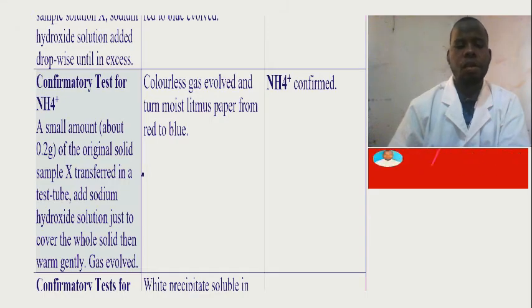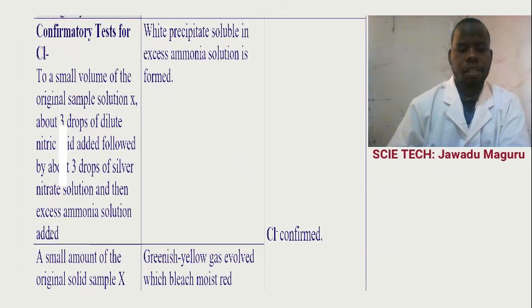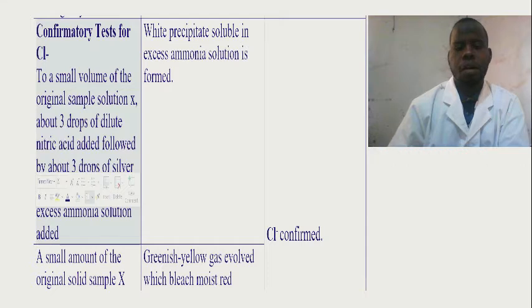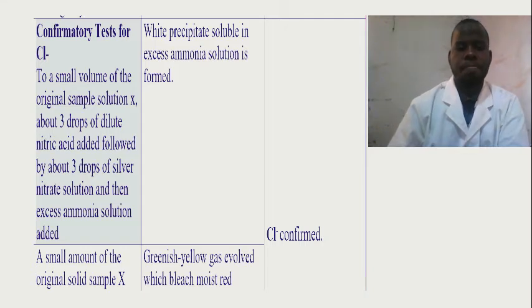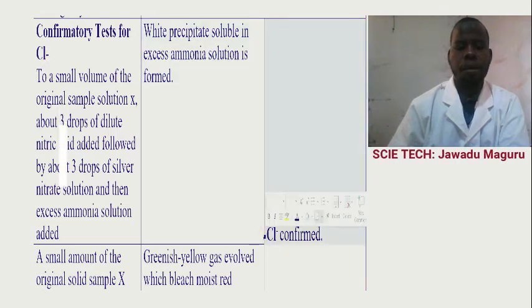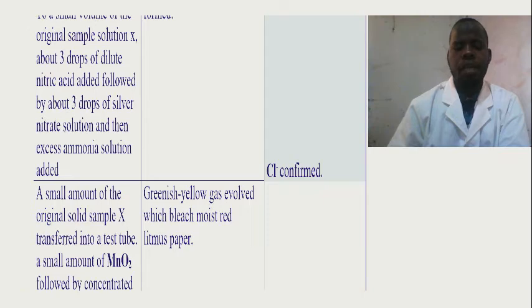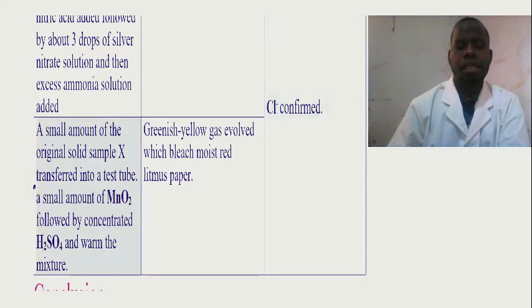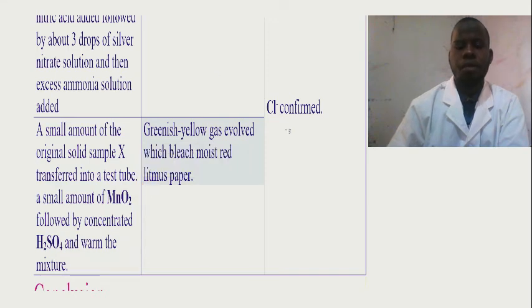The confirmation of chloride ion: you use silver nitrate, nitric acid, and excess ammonia. To a small volume of the original sample solution X, add about three drops of dilute nitric acid, followed by three drops of silver nitrate, then excess ammonia solution. The observation: white precipitate soluble in excess ammonia solution is formed. That is the confirmatory test for chloride ion. You can also confirm using manganese(IV) oxide and concentrated sulfuric acid mixed with sample solution X — the observation would be greenish-yellow gas evolved, which bleaches moist litmus paper.